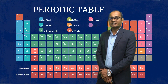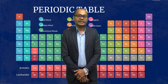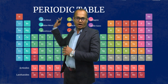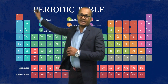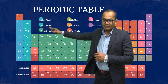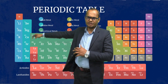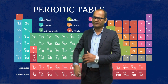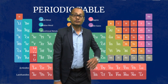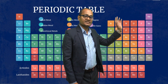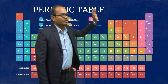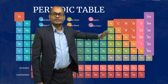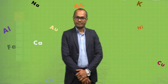If we look at the periodic table, then metals are found mostly on the right hand side of the periodic table. Majority of the elements in the periodic table are metals. And if we have to look for non-metals, then non-metals are found on the left hand side top of the periodic table.